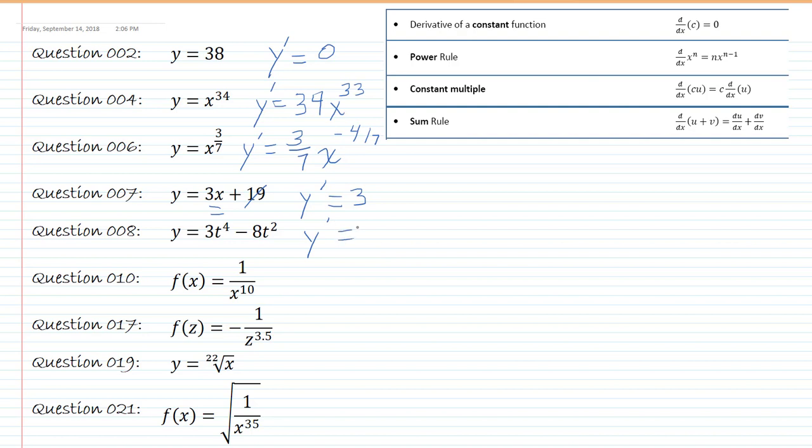Next one, I bring the 4 down and multiply it by that 3, so 12t, and then subtract 1. Minus 2 times 8, 16t, 2 minus 1, so 1.